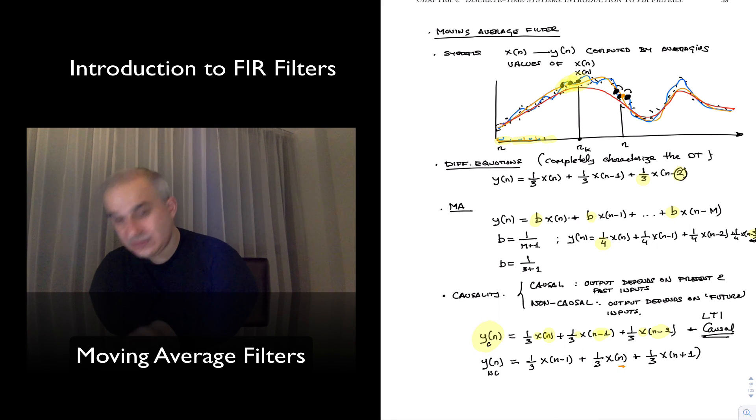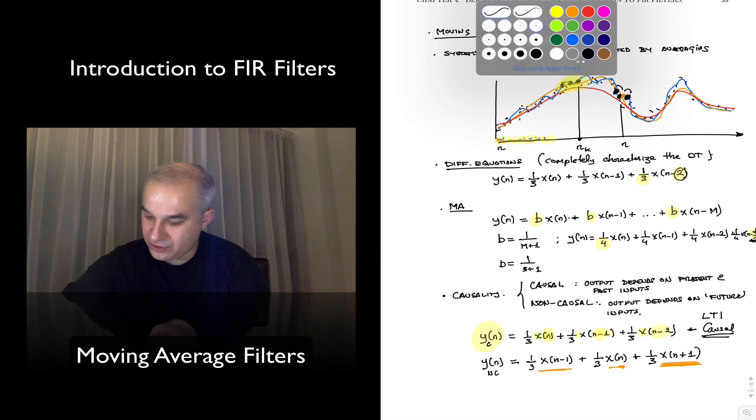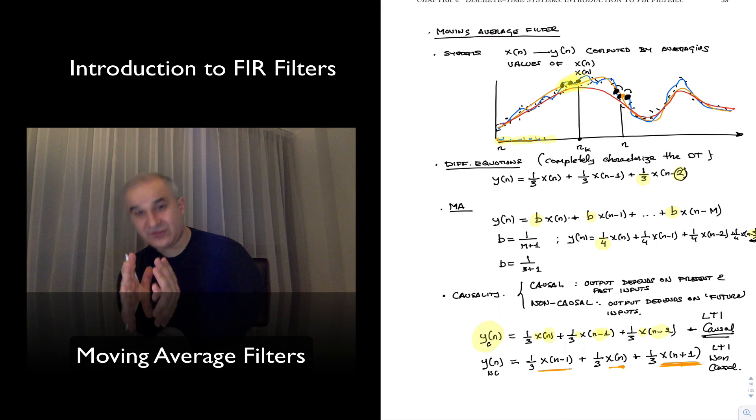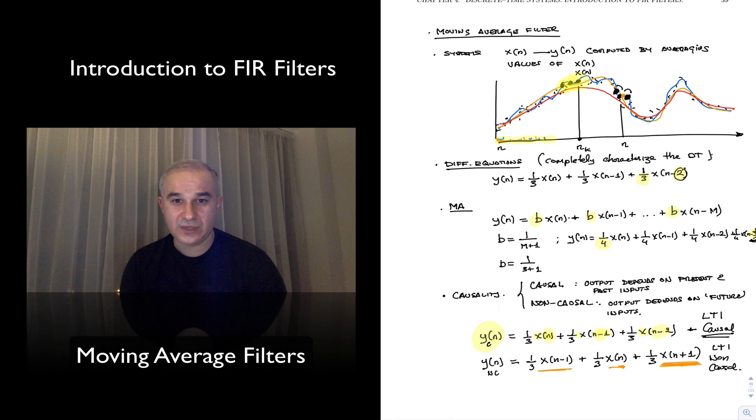And so this implementation may be 1 over 3 x of n-1 plus 1 over 3 x of n plus 1 over 3 x of n plus 1 - the previous one and the after to average those to produce our output. But notice: present input x of n, past input that is there in memory x of n-1, future input. So this is right there non-causal, therefore this LTI is still linear time invariant but non-causal.